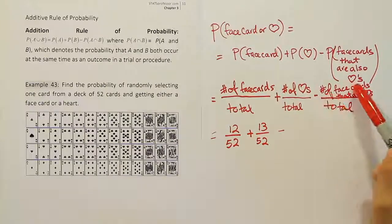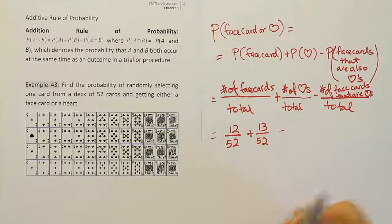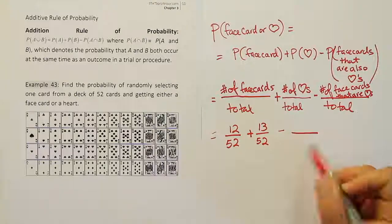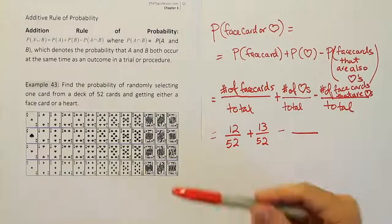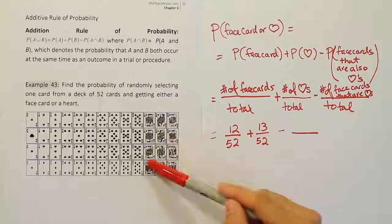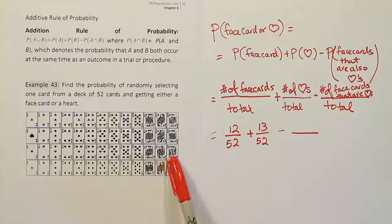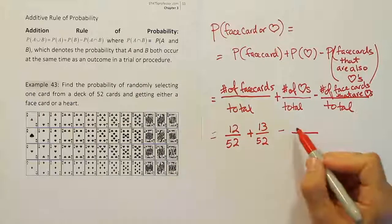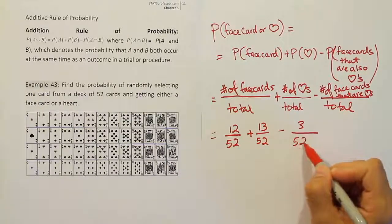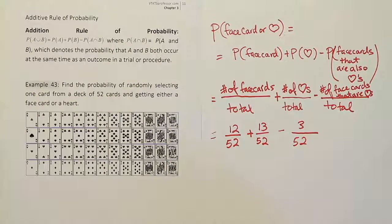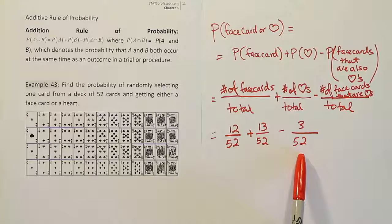Minus the number of face cards that are also hearts. Face cards that are also hearts. Well, these face cards don't have hearts on them. But these three do. So there are three face cards that also have hearts on them. So there are exactly three of those cards out of 52. Notice how the denominator is the same throughout.